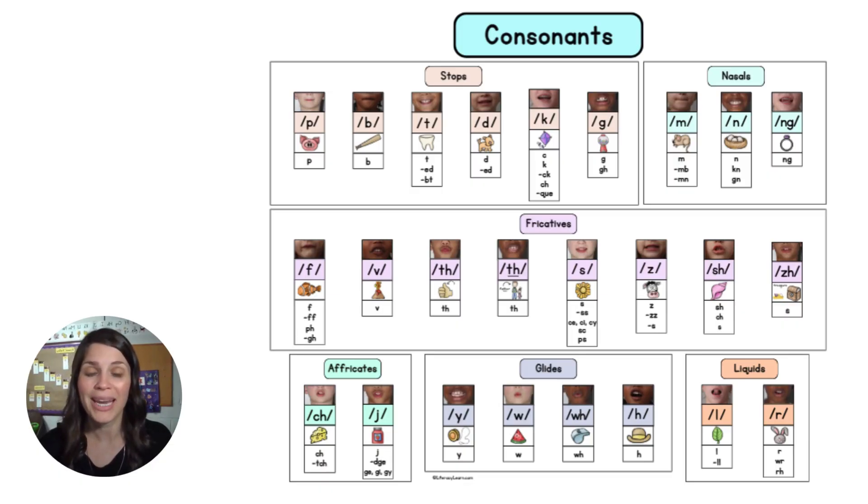So make sure your kids are not adding uh sounds to the end of these consonant sounds. Make sure they don't say puh, right? Because look what happens - our jaw drops when we make that sound, and we already learned that that's only a characteristic of a vowel sound. So here we want to keep our speech sounds really short: p, b, t, right? Not tuh, not buh. We want to keep them short and pure. So that's my tip for you.